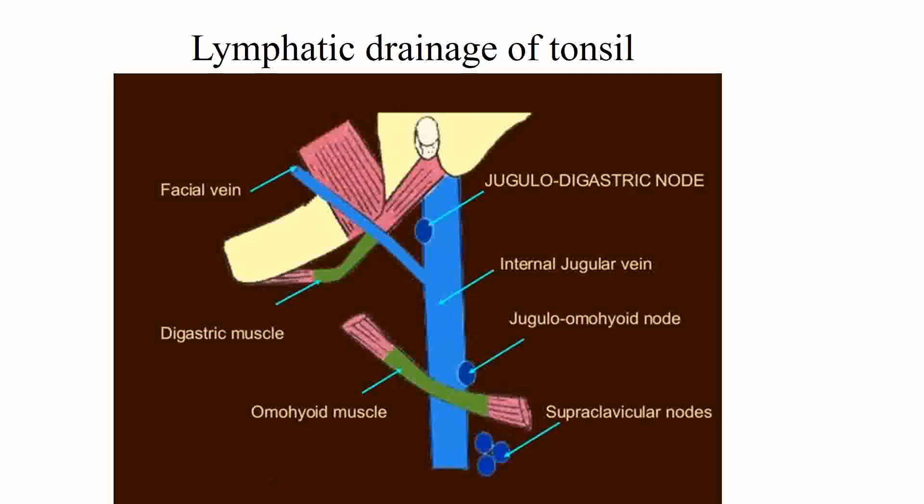Next is the lymphatic drainage of the tonsil. The lymphatics from the tonsil pierce the superior constrictor muscle and drain into the jugulodigastric node, one of the cervical lymph nodes located just below the angle of the mandible. This jugulodigastric node is otherwise known as the tonsillar lymph node.